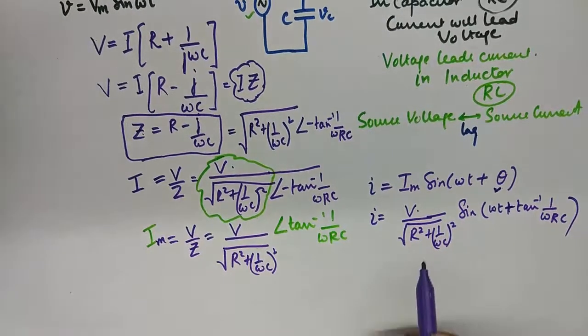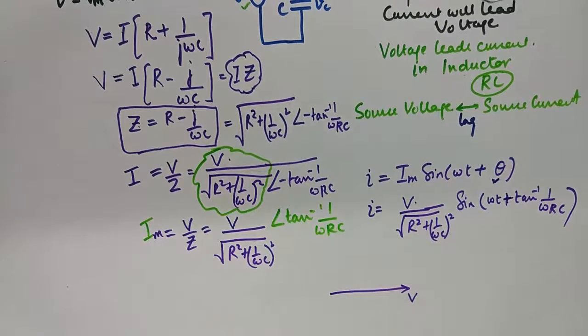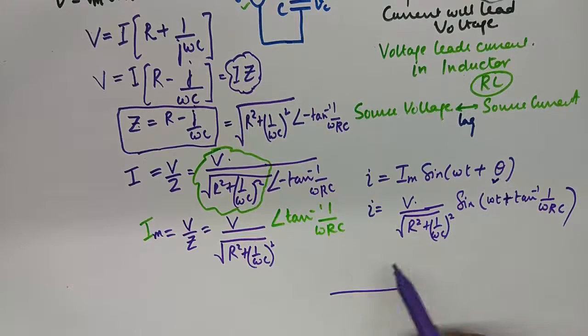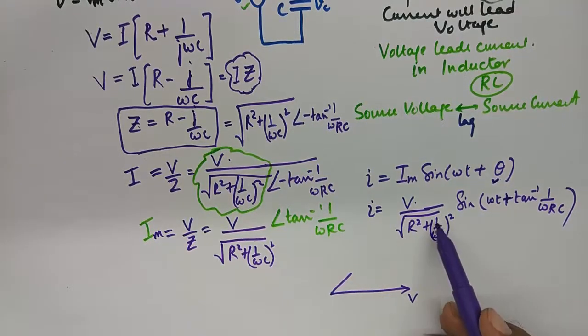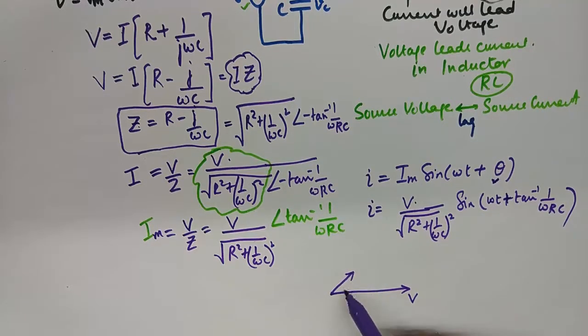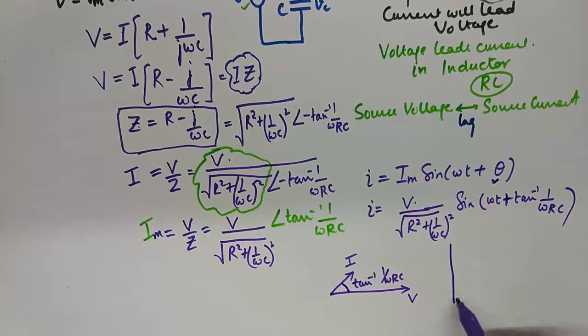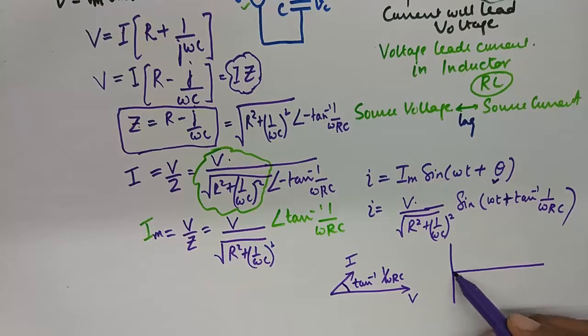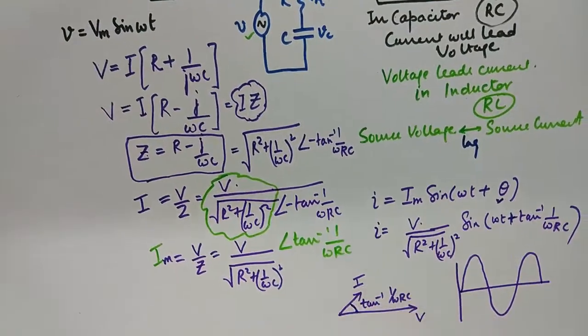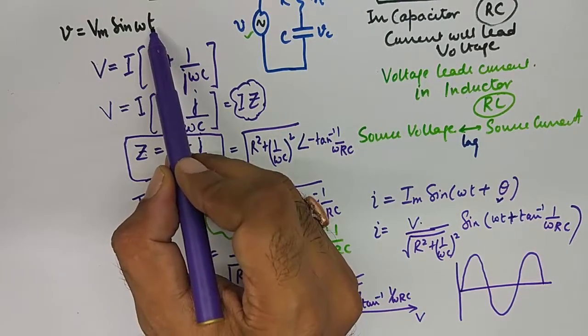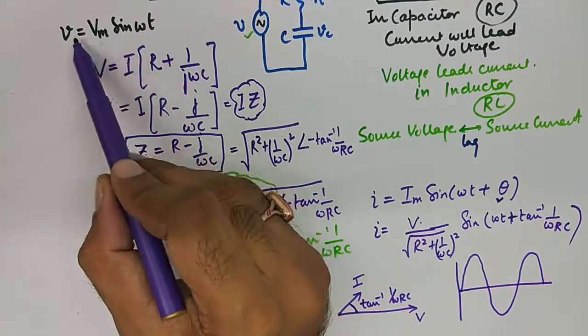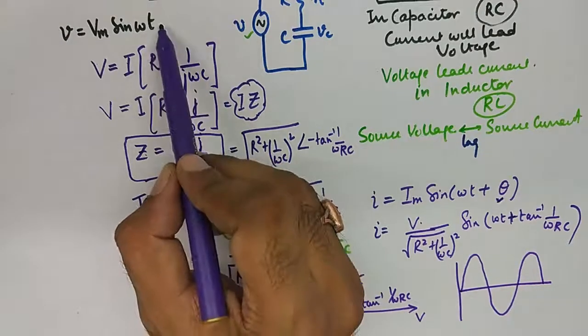So let's draw the phasor diagram now. If this is V, the magnitude of current will be smaller because it is being divided by some quantity. So I would say the current would definitely be smaller but it is leading by an angle of tan inverse 1 upon omega RC. And if we were to represent this in waveforms then we can certainly say that if my voltage is this, because at the beginning we did not consider any phase lead or lag in the voltage source in the first place. The voltage source was a simple plane without any phase lead and lag in the first place.